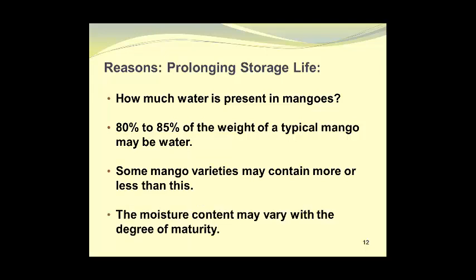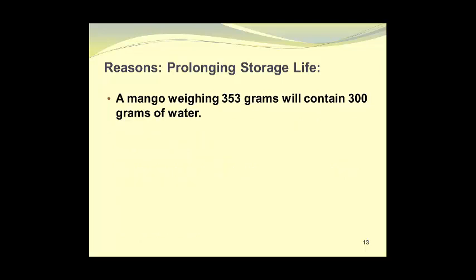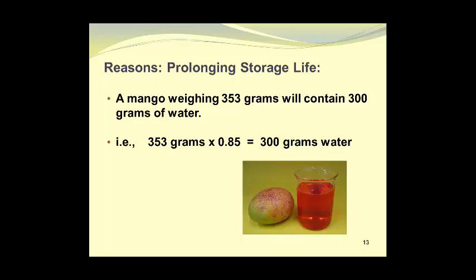The moisture content may vary with the degree of maturity. A mango weighing 353 grams will contain 300 grams of water. Here's the mathematical equation for that: we take the weight of the mango, 353 grams, times the percentage water, 85%, as a decimal fraction, which becomes 0.85, and that gives us 300 grams of water. So here we see a mango which weighs 353 grams. The beaker contains 300 grams of water, with some added food coloring to make it show up better in the photograph. Only 53 grams of solids will be present in that mango.